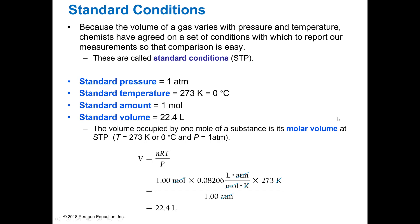When we say that something's under standard conditions, it means different things depending on what you're talking about. When we're talking about gases, we have a very specific list of criteria that have to be present for it to be called standard conditions. In gases, we call this STP because it's going to be standard temperature and pressure. The pressure is one atmosphere, the temperature is 0°C or 273 Kelvin. The standard amount is a mole, and the standard volume is 22.4 liters. The 22.4 liters is called the molar volume, and the molar volume is the volume occupied by one mole of a gas at STP.